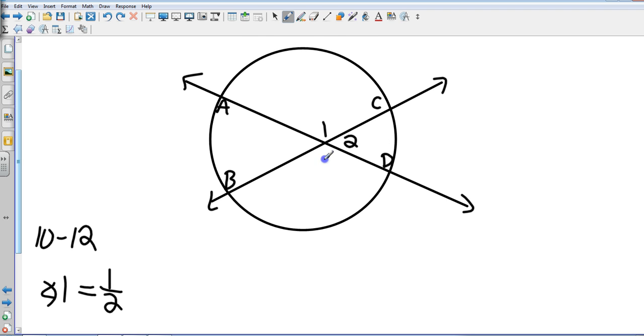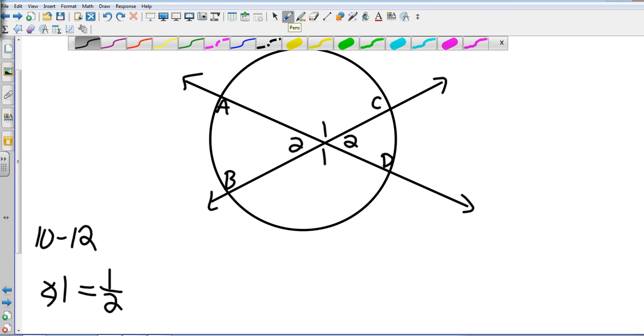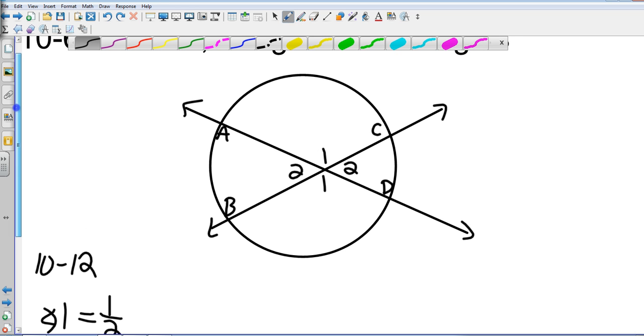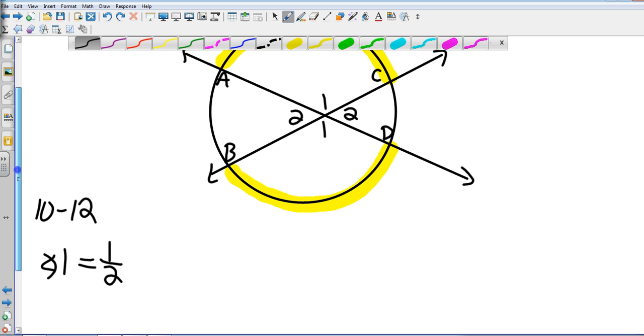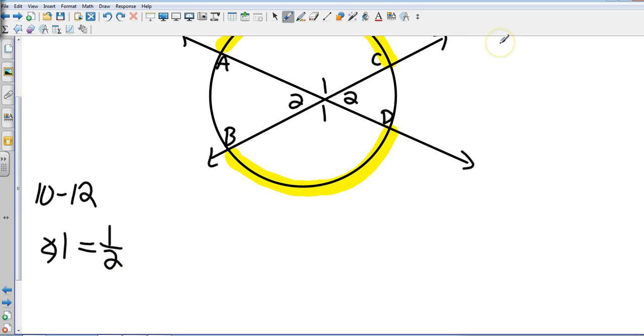So angle 1 is equal to one half of the intercepting arcs added together. Obviously these are vertical angles, so this is also the same as angle 1. Let's look at its intercepted arcs. Angle 1 intercepts this arc, and because angle 1 is vertical on the other side, it also intercepts this arc. So we're going to add those two together. That's going to be one half of arc AC plus DB.